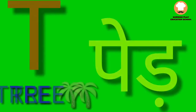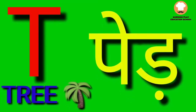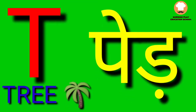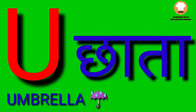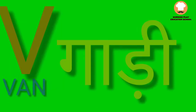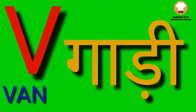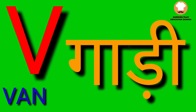E for Tree. Tree yane peed. U for Umbrella. Umbrella yane chaatah. V for Wind. Wind yane cari.